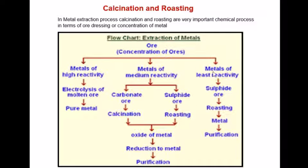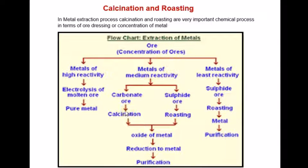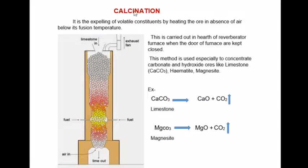Third, the metals of less reactivity — the metals which are less reactive — can be concentrated using roasting process. After calcination and roasting, the reduction of metal and finally the purification of metal is done. Today we will focus on calcination and roasting only.